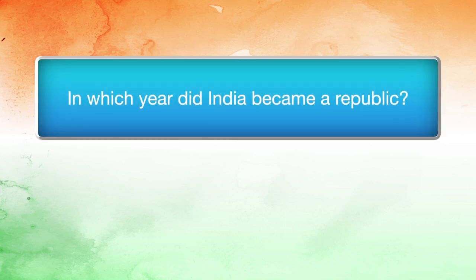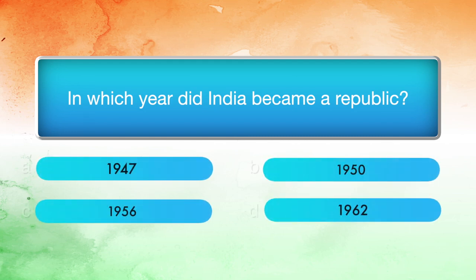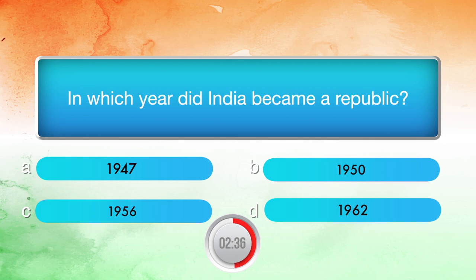In which year did India become a republic? Options: 1947, 1950, 1956, 1962. Answer: 1950.